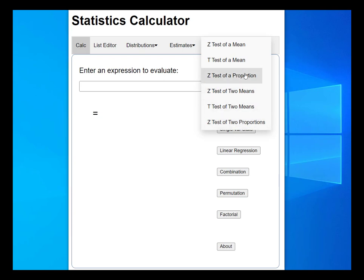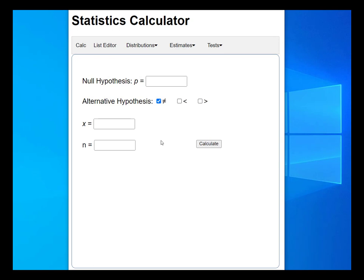Now when you come into the interface here, the options are very much the same as what you would find in the hypothesis test function in the calculator. The first item is the value of the population proportion from the null hypothesis. Let's say we have a hypothetical problem where 87 percent of a population favor some event.